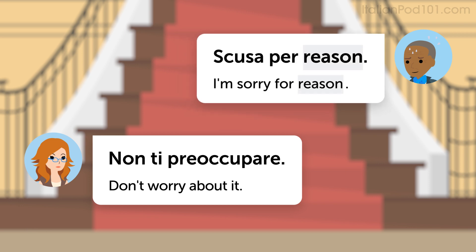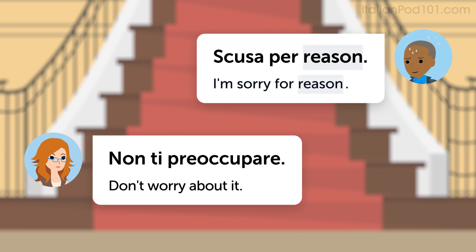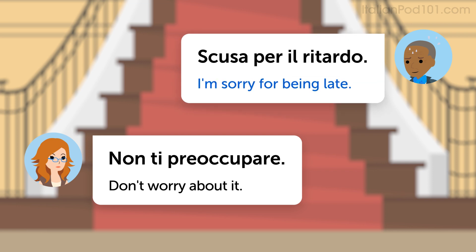First of all, you'll need to learn how to say 'I'm sorry for [reason].' The pattern is: Scusa per [reason]. This Italian sentence literally translates as 'Sorry for [reason],' but it means 'I'm sorry for [reason].' For example, 'I'm sorry for being late' is Scusa per il ritardo.